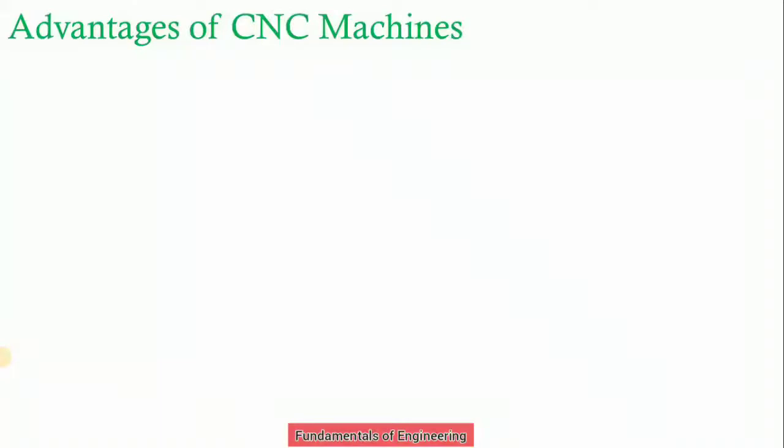CNC machines have features like storage of more than one part program, various forms of program input, program editing at the machine tool site, and good interpolation — including helical, parabolic, or cubic interpolation. Combination interfaces allow the machine to be linked to other computers and computer-driven devices like robots. CNC machines also have online diagnostics capability to detect malfunctions or system breakdowns.